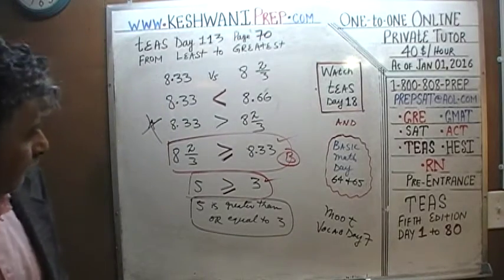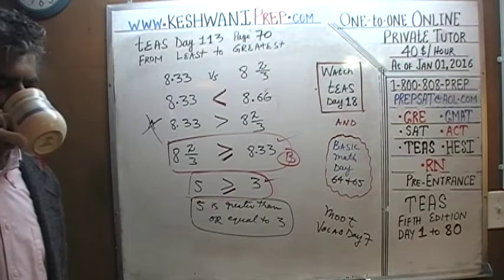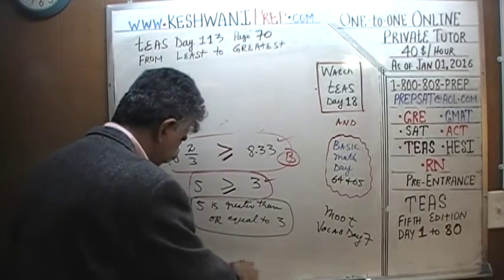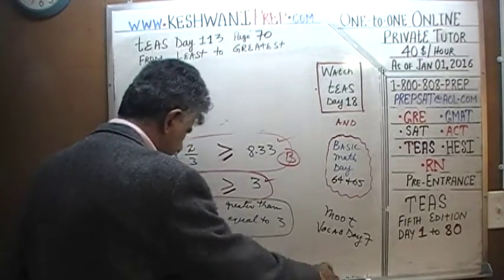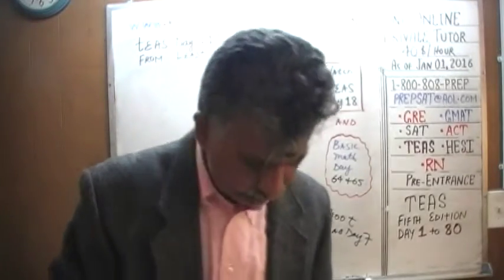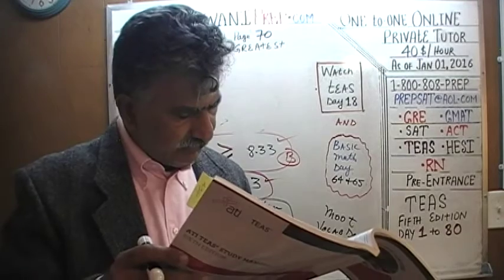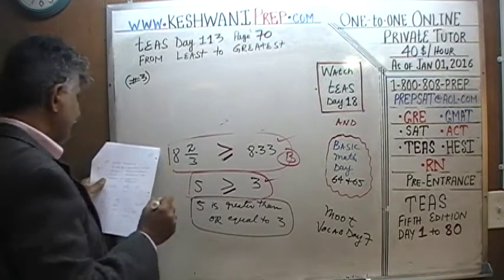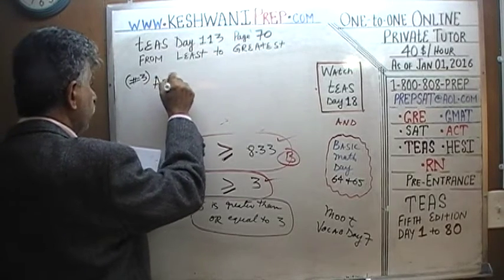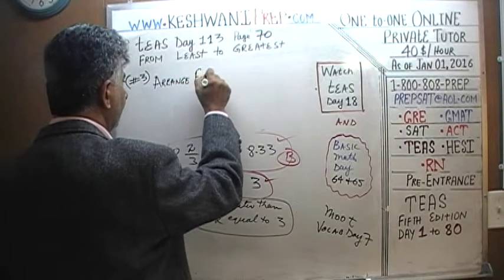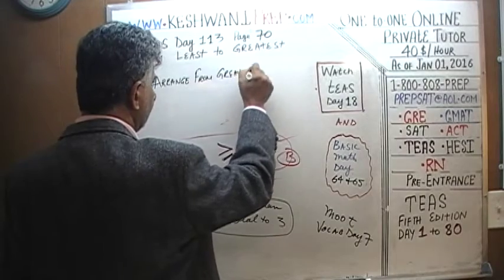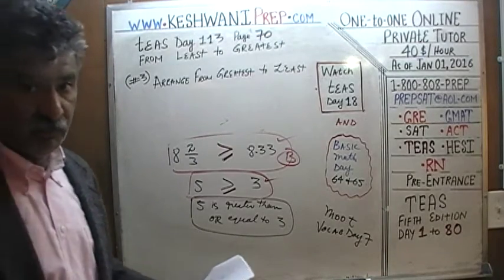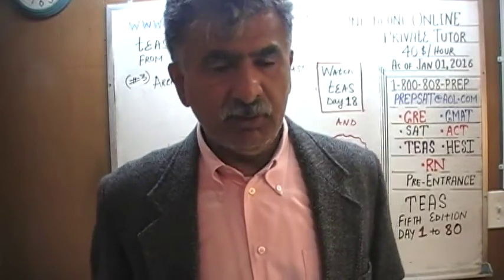Let's move on to the last one. Problem number 3 says: which of the following lists the numbers in decreasing order? Decreasing order — the same as saying from greatest to least. Because if you start from the greatest and go to the least, you're decreasing as you go along.